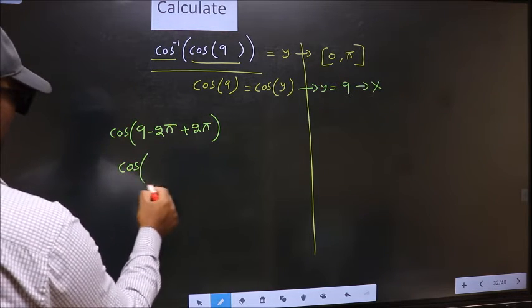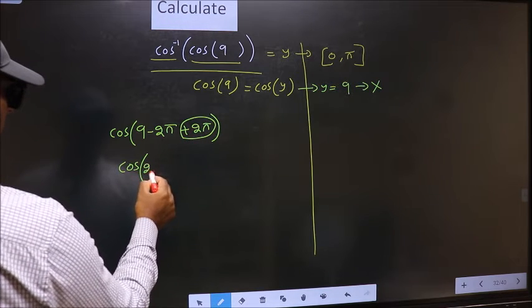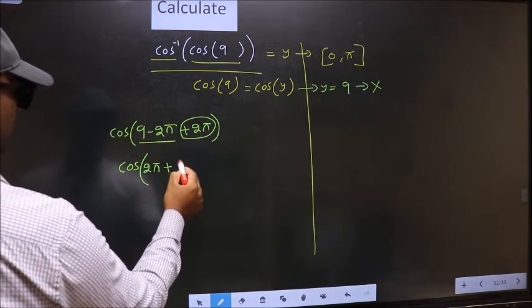Cos. This 2 pi, now I write at the start, followed by this in the bracket.